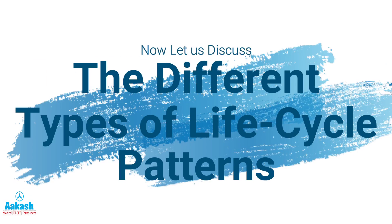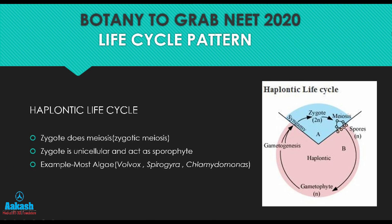Looking at the different types of life cycle patterns, the first one is the haplontic life cycle. In algae like Volvox and Spirogyra, the sporophytic generation is represented by a single-celled zygote, and that zygote acts as a meiocyte producing haploid spores by meiosis — hence spores represent the first gametophytic structure. These spores then divide mitotically producing a free-living dominant gametophyte, which produces gametes that fuse forming the zygote. If subjected to unfavorable conditions, the zygote may get surrounded by a thick wall forming a zygospore, which represents the overwintering stage and helps overcome unfavorable conditions.